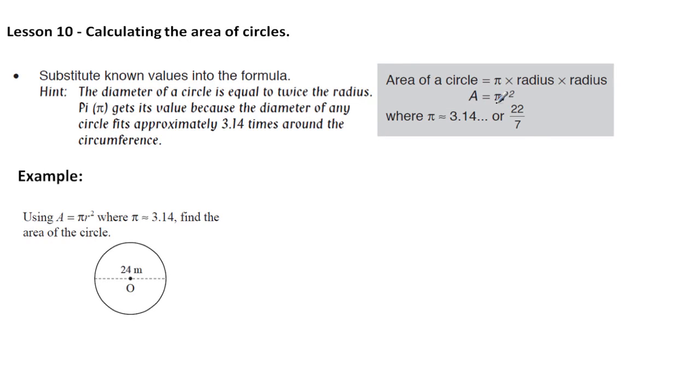The area of a circle is pi times the radius squared. And we're going to use either 3.14 as pi or 22 over 7.